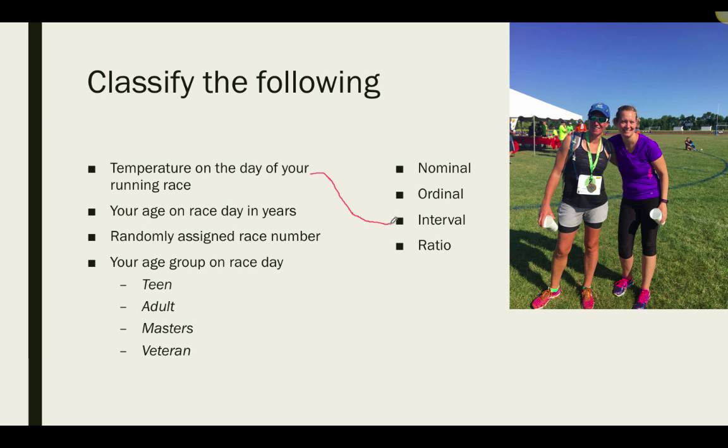Your age on race day. This does have a meaningful zero. Zero years means zero, nothing. It does not mean I am running a half marathon at the age of zero or that zero is possible. It just means that it does mean nothing or absolutely zero. As a result, this is ratio in nature.